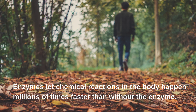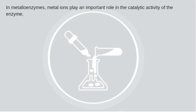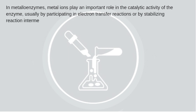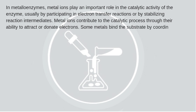In some cases, metalloenzymes act faster than regular enzymes. The reason is that in metalloenzymes, metal ions play an important role in catalytic activity, usually by participating in electron transfer reactions or by stabilizing reaction intermediates. Metal ions contribute to the catalytic process through their ability to attract or donate electrons, and some metals bind the substrate by coordination links.